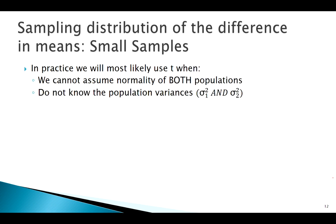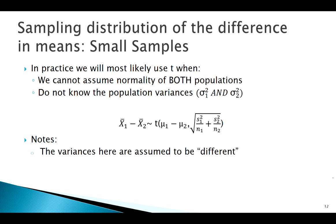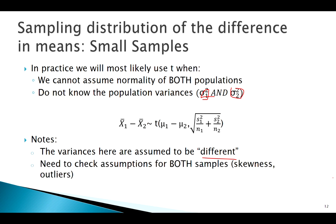For small samples — when we can't assume normality of both populations, don't know the variances, or have small sample sizes — just as with one-sample means, we use the t-distribution. A side note: we're assuming the variances of the two populations are different since we don't know sigma₁² and sigma₂². Also, just as normal minus normal is normal, for a t minus t to remain a t, we need to meet our t assumptions — check skewness and outliers for both groups.